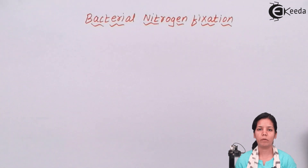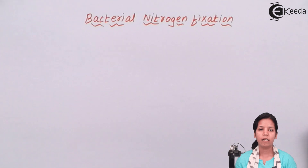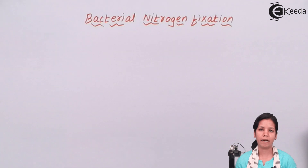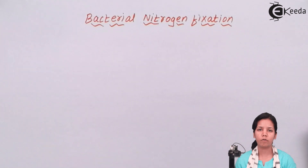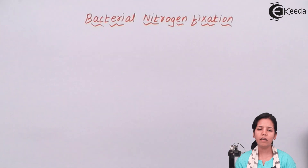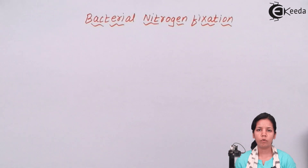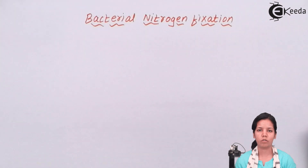There is a bacteria called Rhizobia which is present inside the soil. Leguminous plants make a deal with this Rhizobia bacteria so that Rhizobia can give leguminous plants nitrogen, or can fix nitrogen into leguminous plants. So this Rhizobia bacteria absorbs atmospheric nitrogen and fixes it into leguminous plants. In return, the leguminous plants provide shelter and food to this Rhizobia bacteria. This is basically a give and take association.